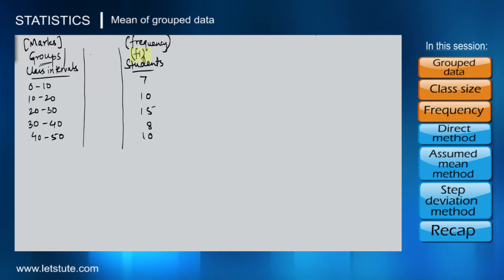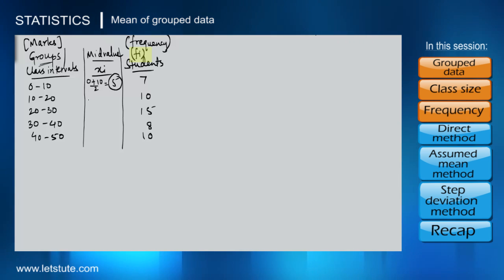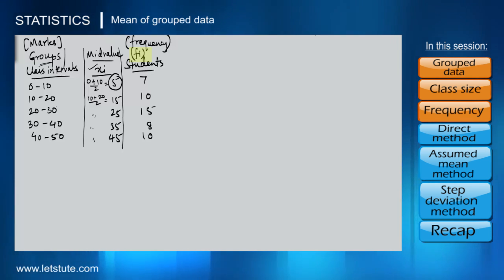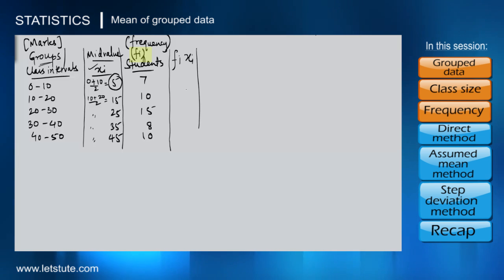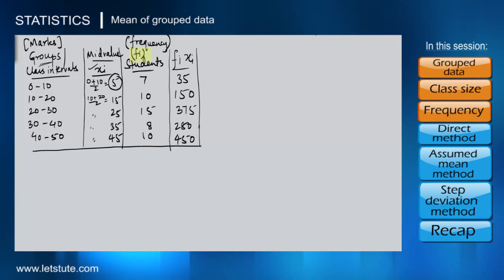Since we don't know the exact marks in each class, we take a mid value from each class, called xi. For the class 0–10, the mid value is (0+10)/2 = 5. For 10–20 it is 15, and similarly we get 25, 35, and 45 for the remaining classes. The next step is to find the product of frequency and mid value, that is fi×xi. So f1×x1 = 7×5 = 35, f2×x2 = 10×15 = 150, and so on for every class.